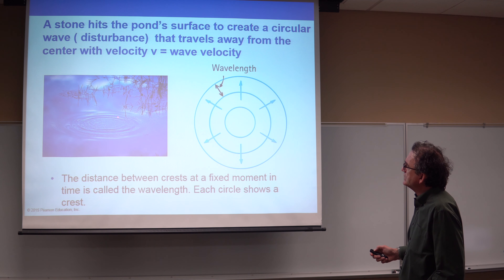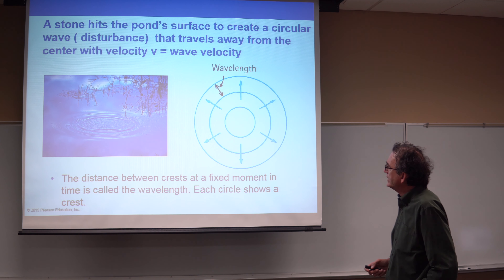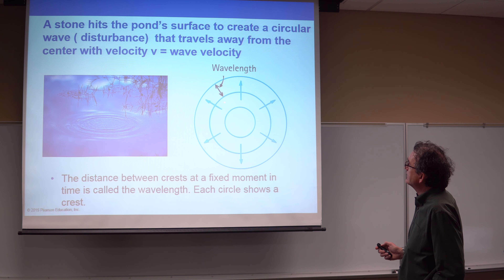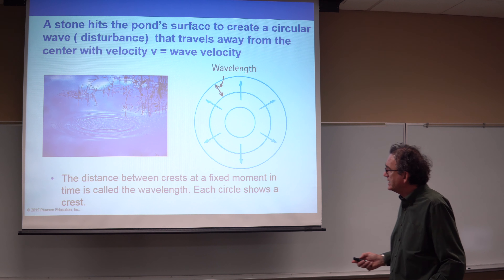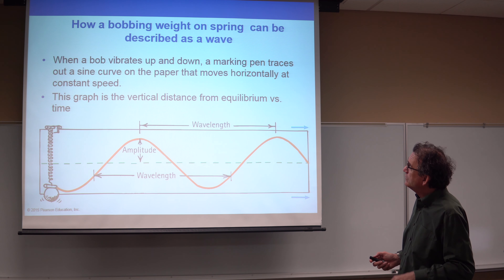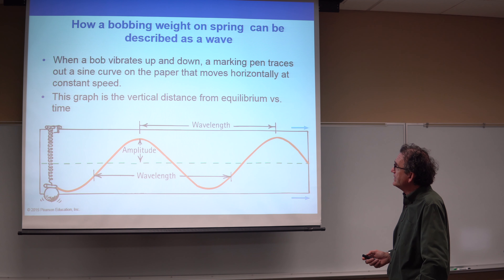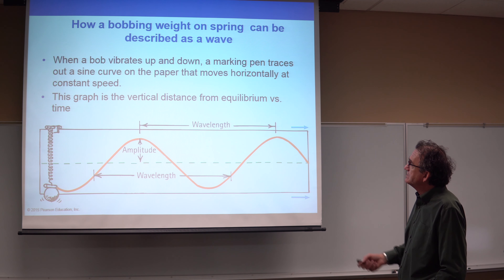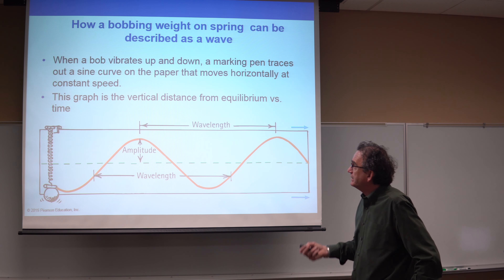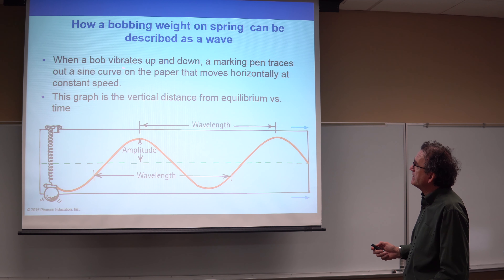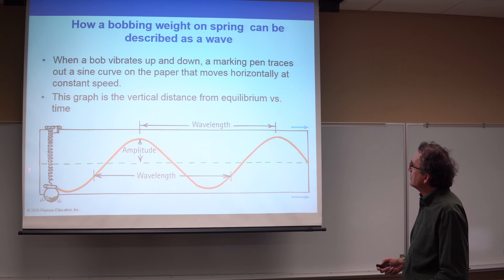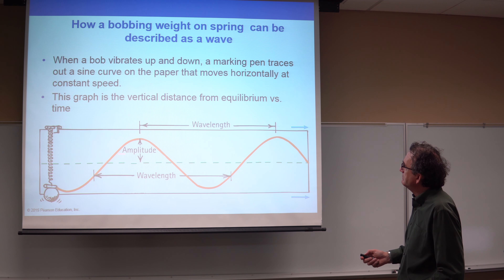This is a snapshot in time — a frozen picture of the wave taken very quickly. The distance between crests is what we call the wavelength. The rate at which the crest moves away from the center gives us the wave velocity. Those are the first two concepts to be familiar with. Another way to visualize wave motion is the bobbing of a weight on a spring.